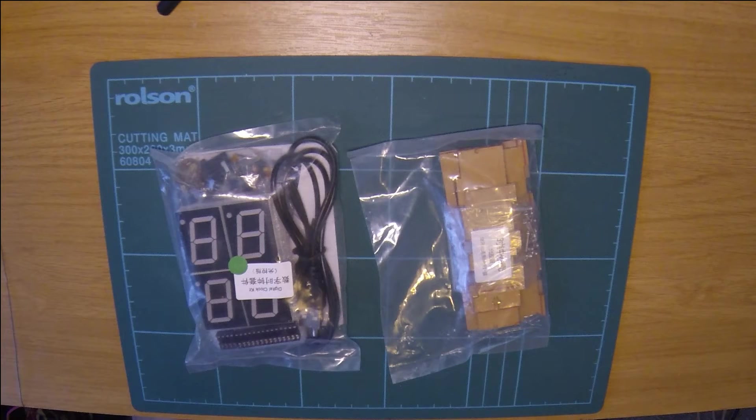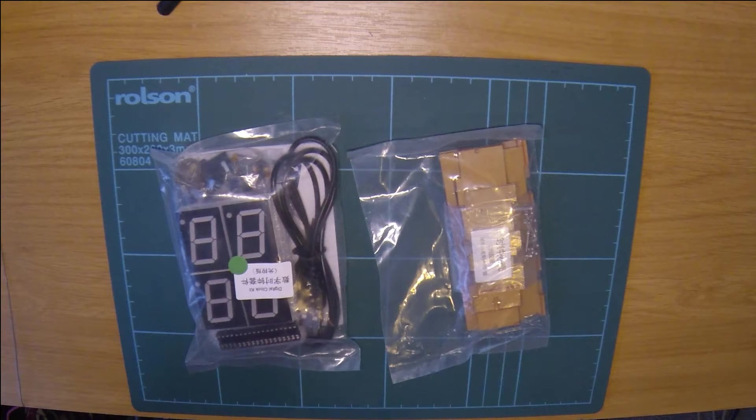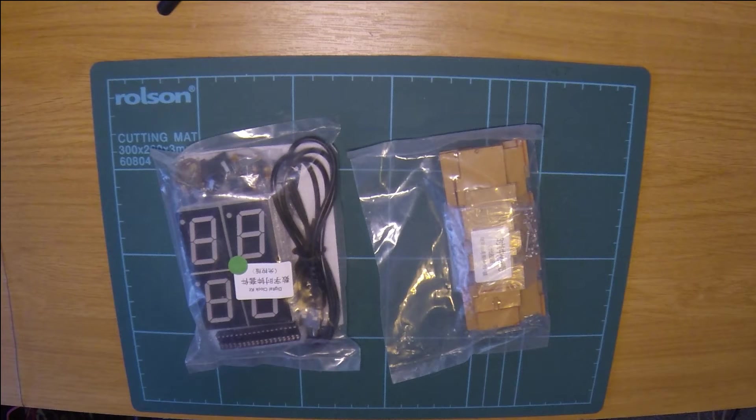OK, here we've got a Banggood kit of a clock. Now this is actually the second one of these I've built. The first one was a blue one. I don't actually know what color this one is. There are four colors in total: blue, green, white, and red. Well I've got the blue one, so this is one of the other three. So we'll probably find out at the end of the build which one it is.